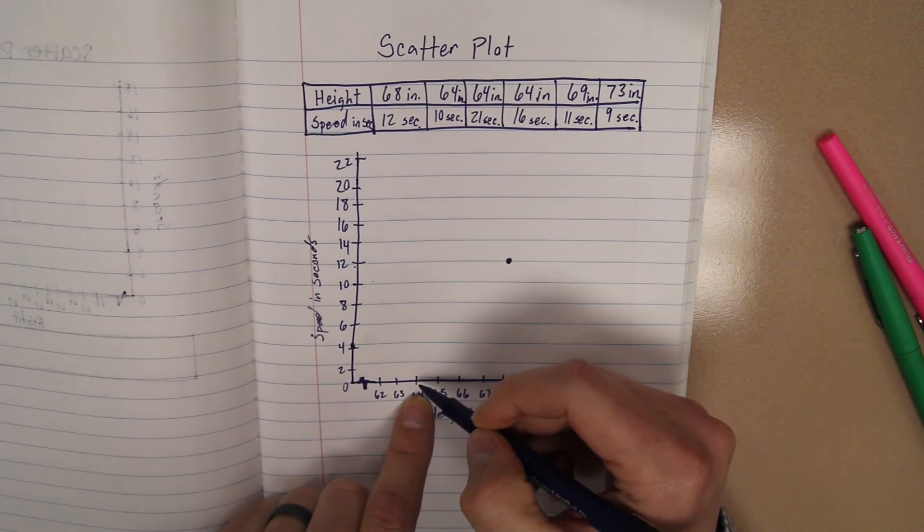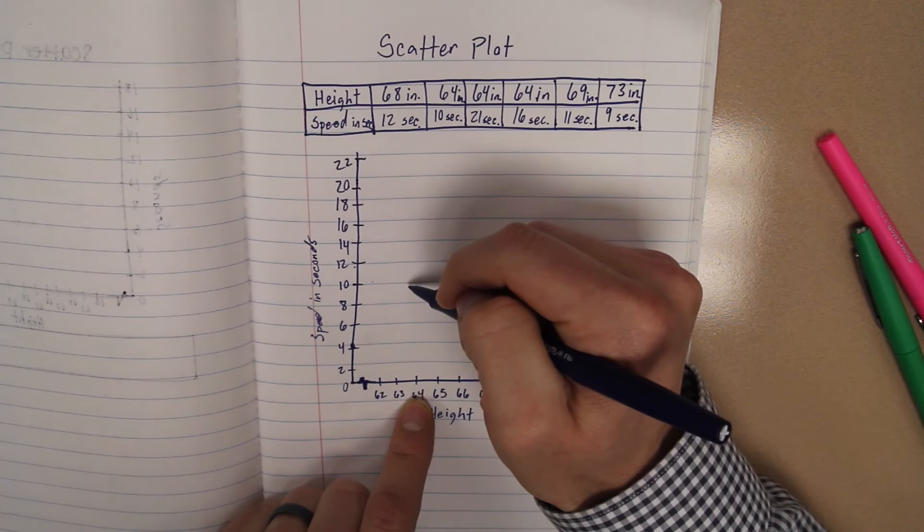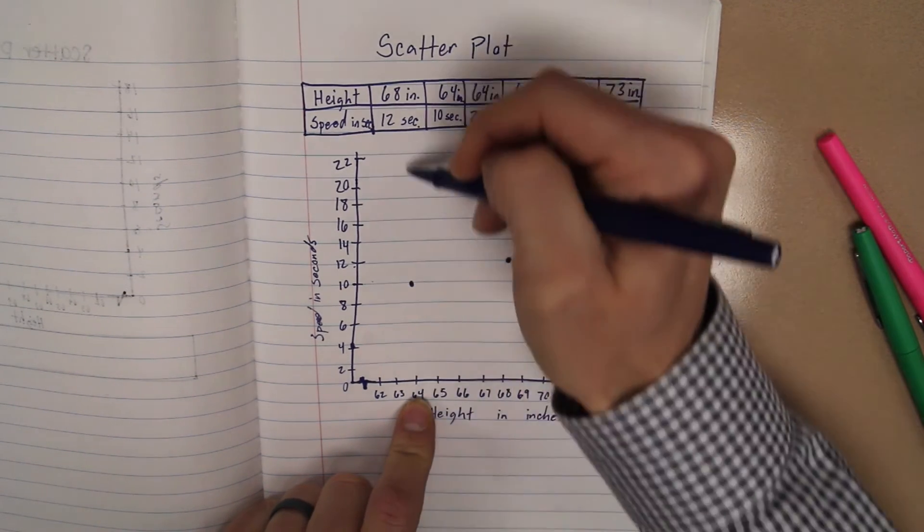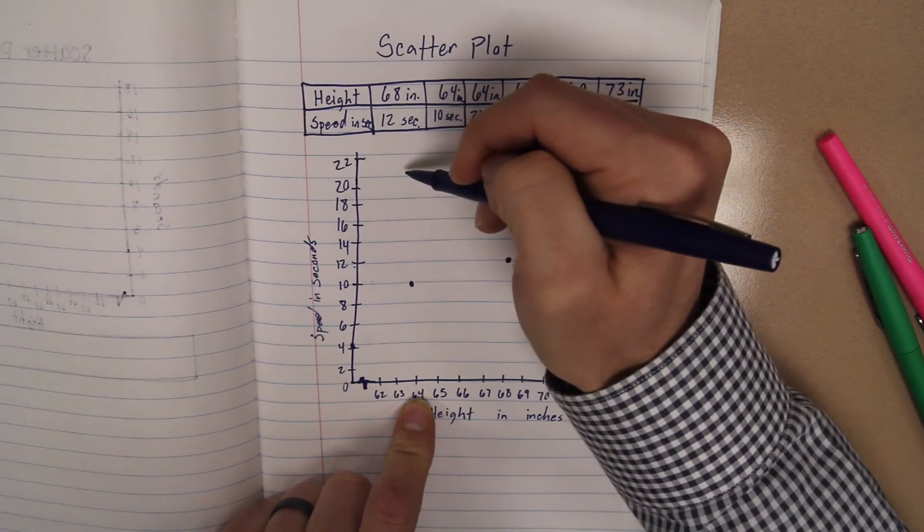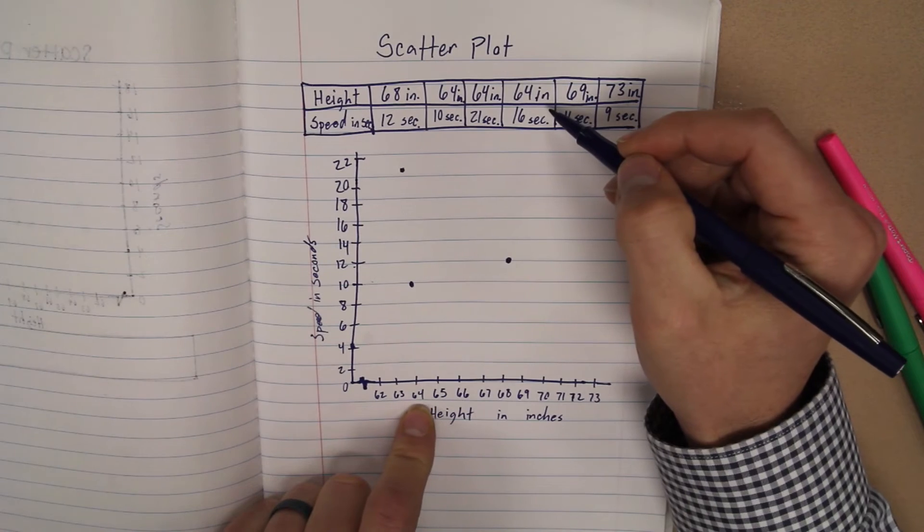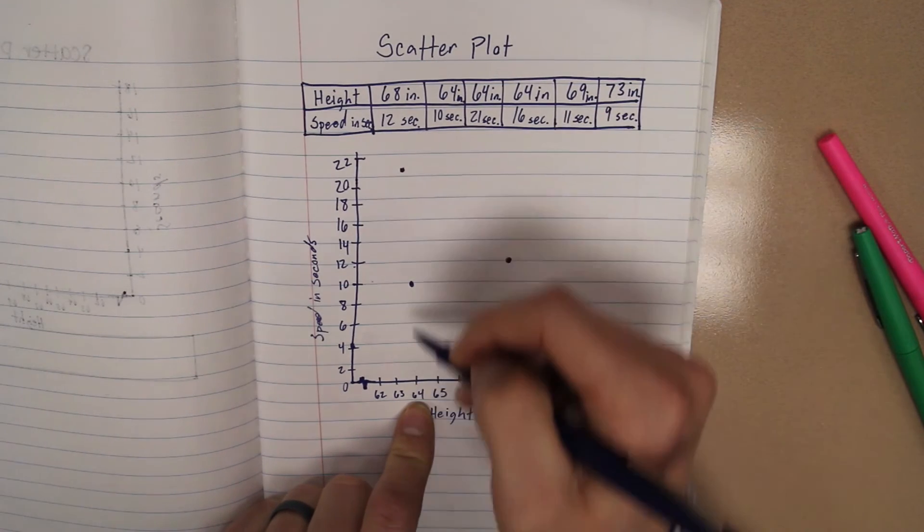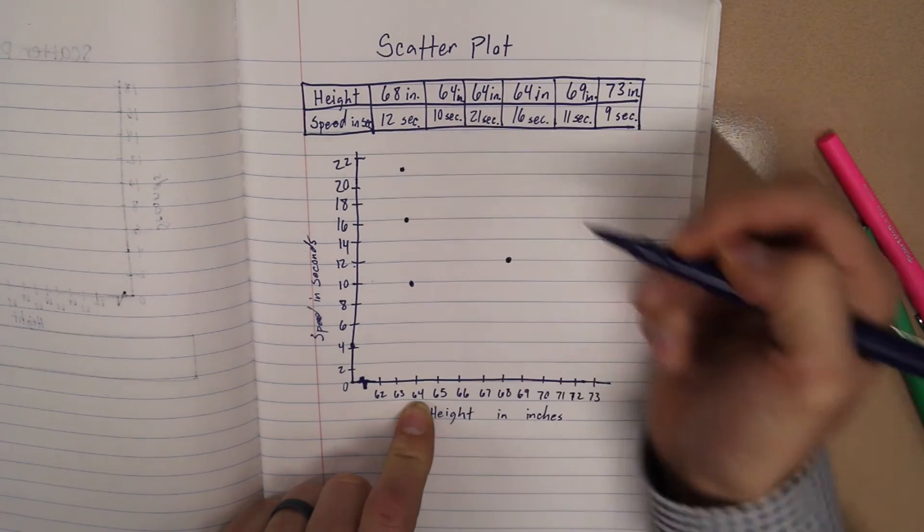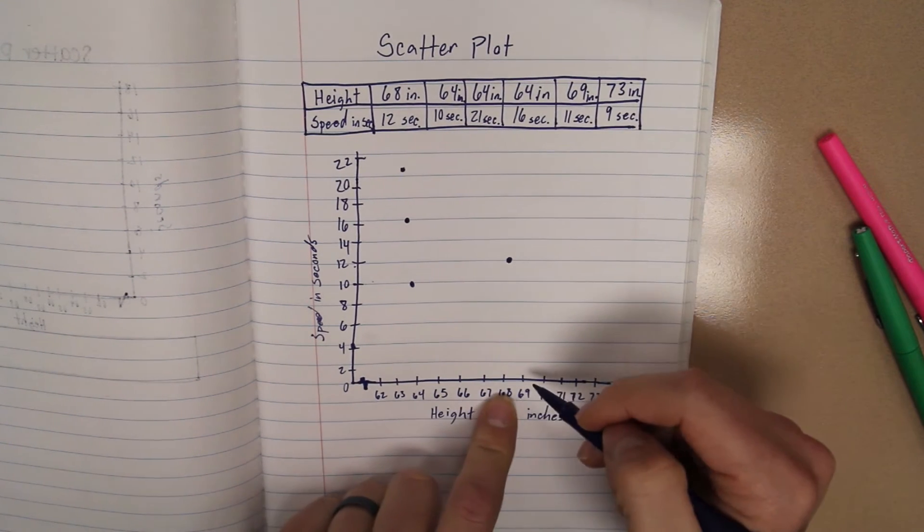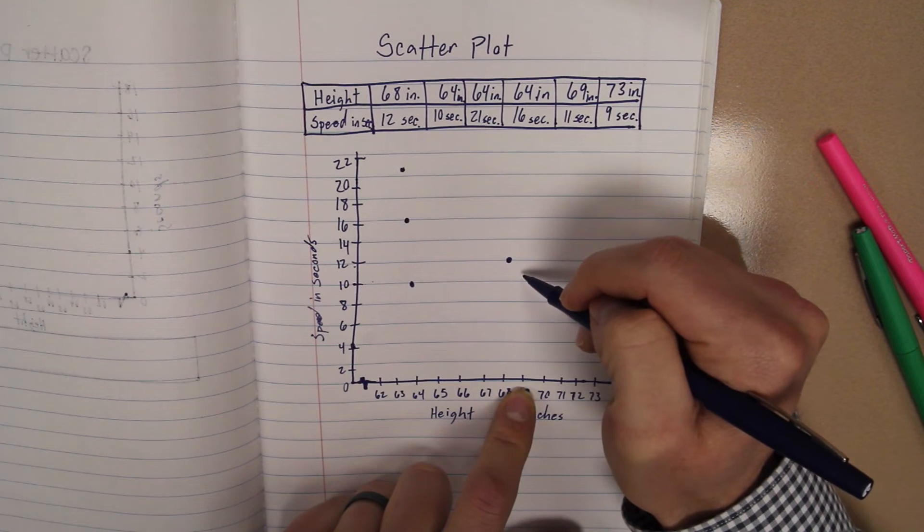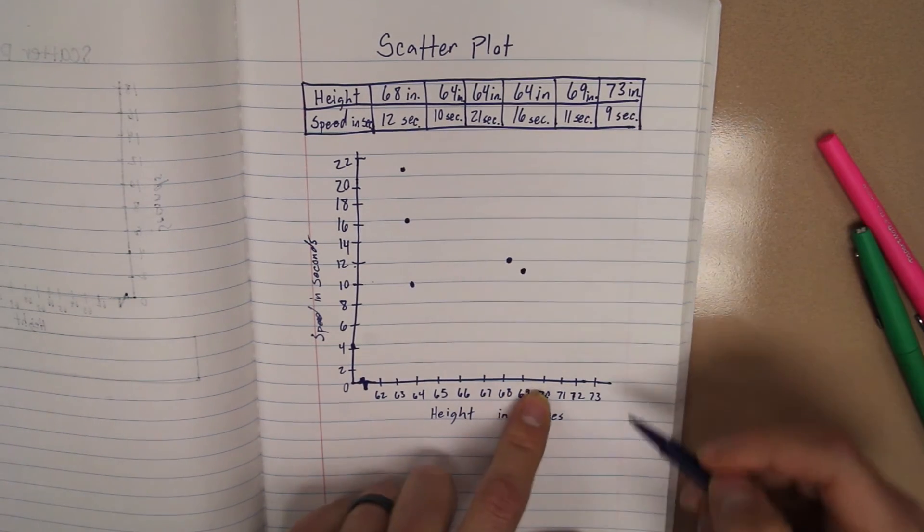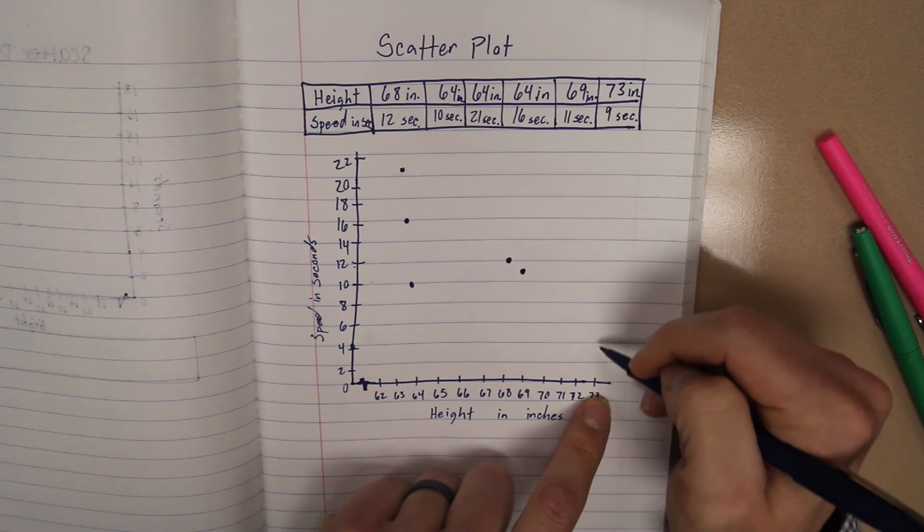64, I'm going to go to 10 seconds. 64 again, I'm going to go to 21 seconds. So it's way up here. It's between these two. 64 again, I'm going to 16 seconds. 69 inches, I'm going to 11 seconds. And 73 inches, I'm going to 9 seconds.